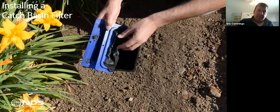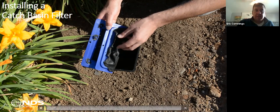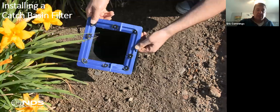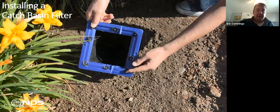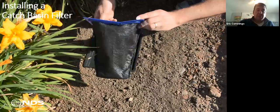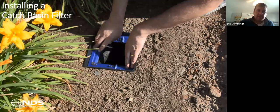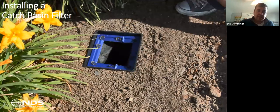Filters come folded flat in a bag. Once you open the bag, take it out, unfold it, drop it into the catch basin, put your grate back on top, make sure the screws line up, and you've now got an additional level of protection to make sure the system remains clean.